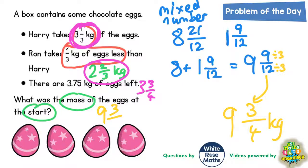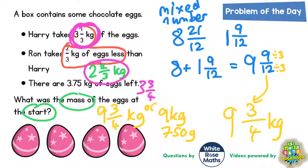Reading back to the question — what was the mass of the eggs at the start? The mass was 9 and 3 quarters of a kilogram. If you wanted to express that in different units, 9 kilograms and 3 quarters of a kilogram would be 3 quarters of a thousand grams, so it would be 9 kilograms and 750 grams. Or as a decimal, 9.75 kilograms would also work. Either of those two answers would be acceptable.